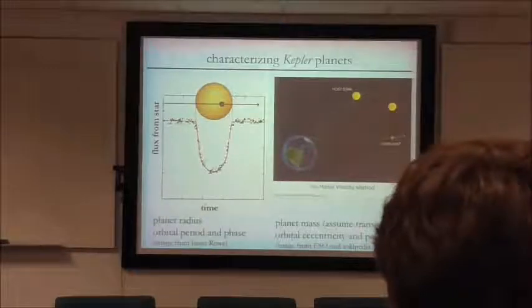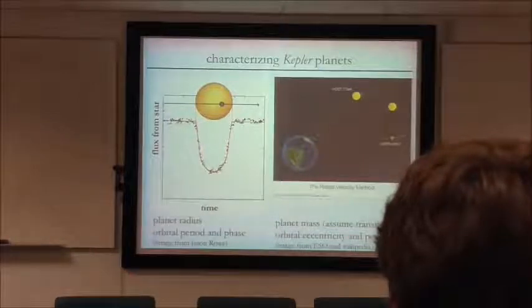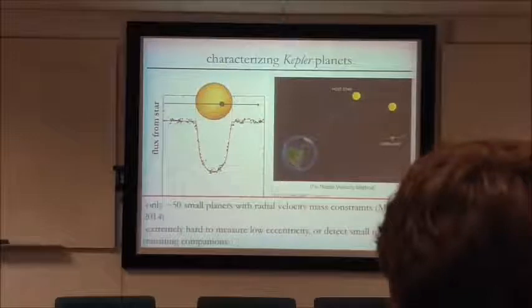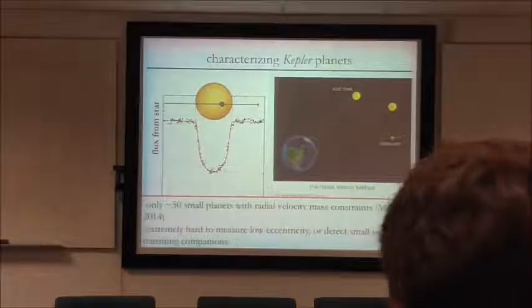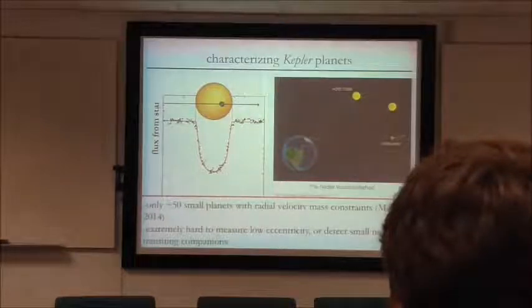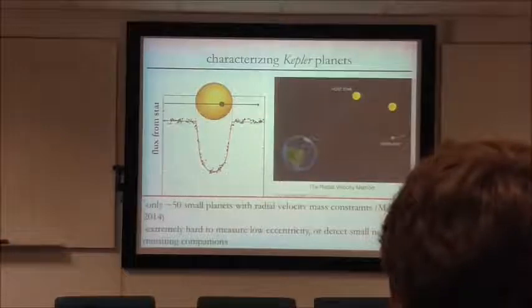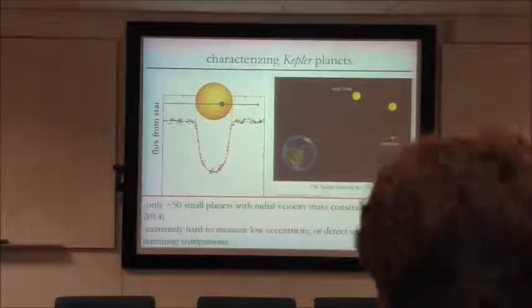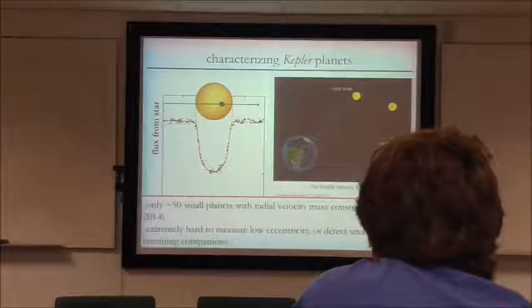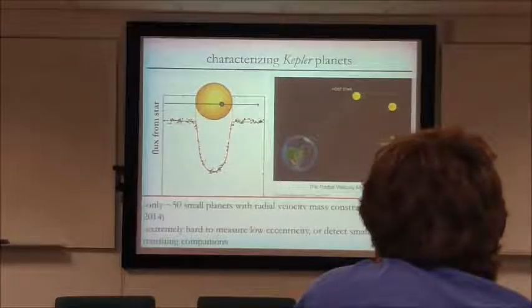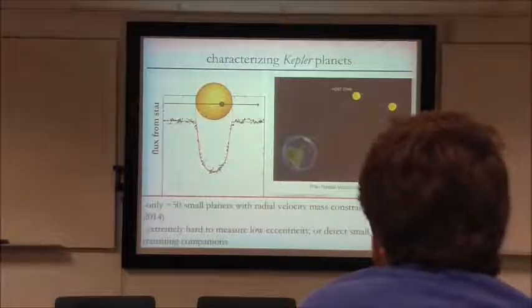Unfortunately, the planets we're talking about — small planets orbiting preferentially faint stars, because most Kepler stars are faint — are just out of the range of the radial velocity method. Because of that, there are only something like 50 small planets with radial velocity mass constraints in the Kepler sample, and that number isn't really going to increase. Furthermore, if it's so hard just to measure a planet's mass with RV, you're certainly not going to measure higher-order corrections like eccentricities. So it seemed like Kepler was wonderfully successful at detecting planets, but it's leaving us with a population that's not very well characterized.